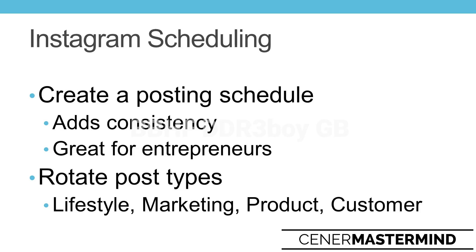In one of the first videos, we talked about the different post types — lifestyle shots, marketing shots, product shots, customer shots if you have any. You want to basically rotate the post types. You should really be over 50% lifestyle and customer post types. You want to be as real as possible. You don't want to just use Instagram as a one-way megaphone where you're screaming out marketing messaging all the time — people are going to get sick and tired of that.